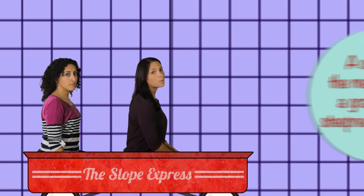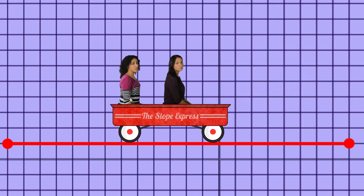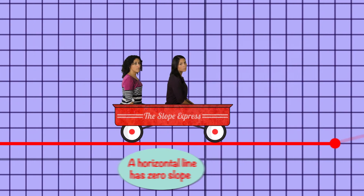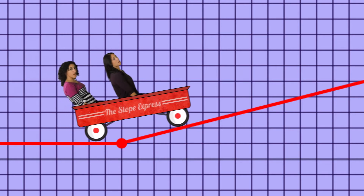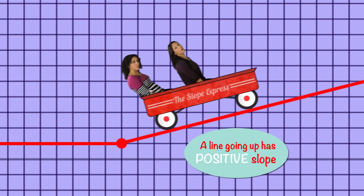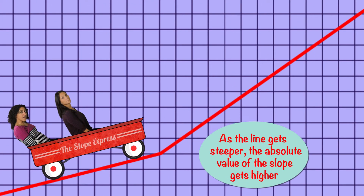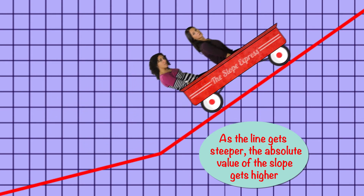A slope is a measure of the gradient or steepness of a line. And as you can see, on this line between these two points, we're not moving. That means there is zero slope. Well, look what happens when the points move. Now we're going somewhere. This slope is going up, so we call it a positive slope. And as the line gets deeper, the absolute value of the slope gets higher.